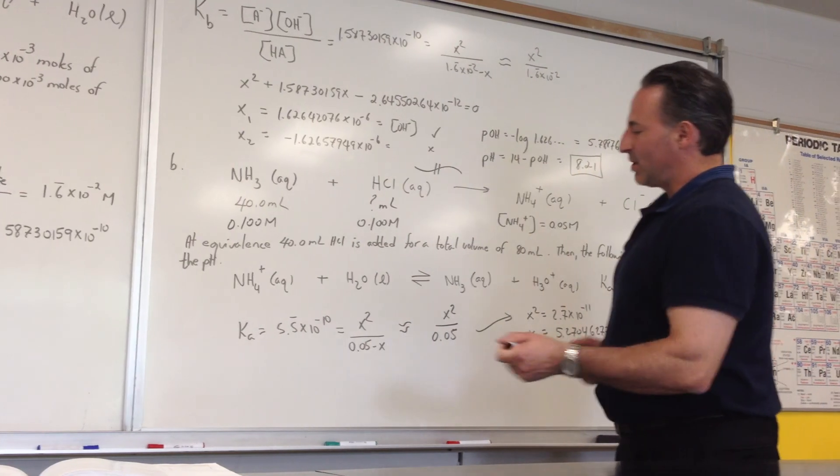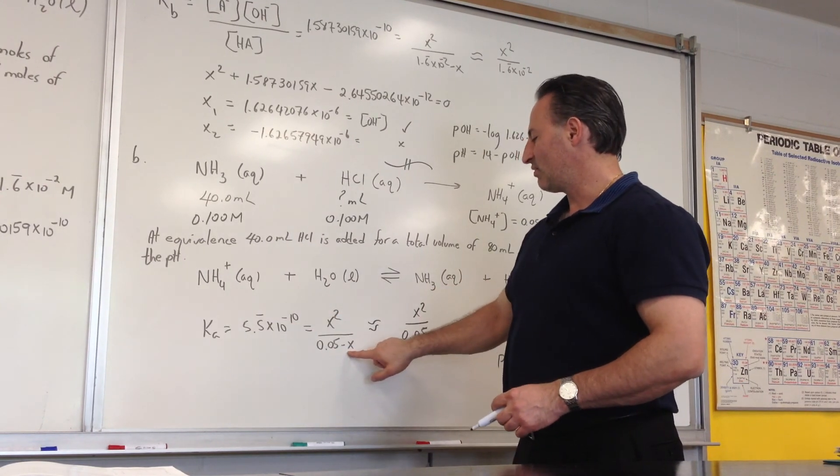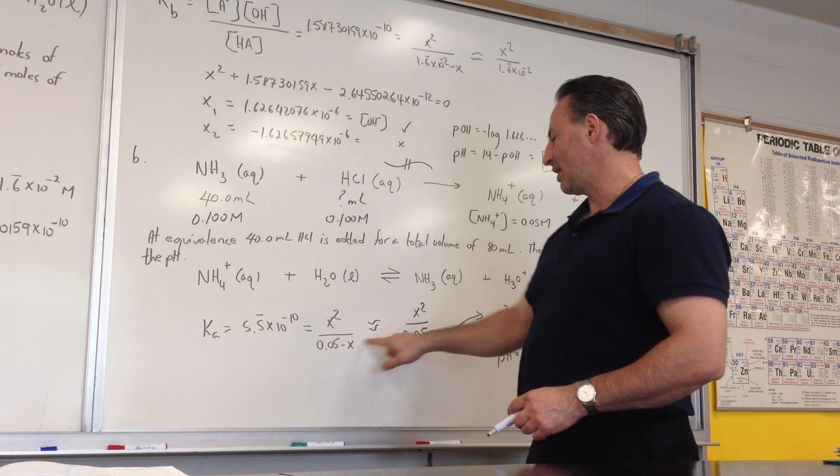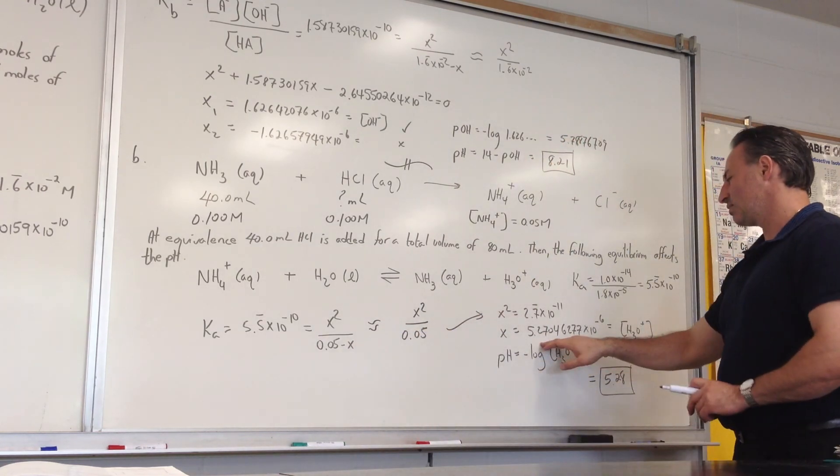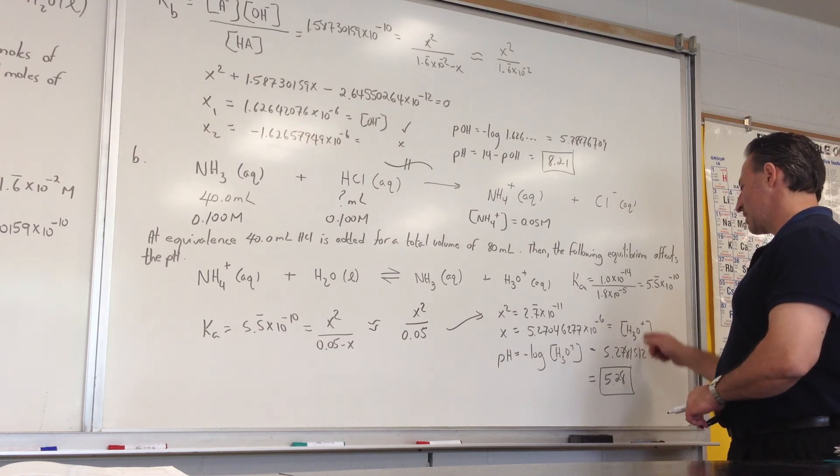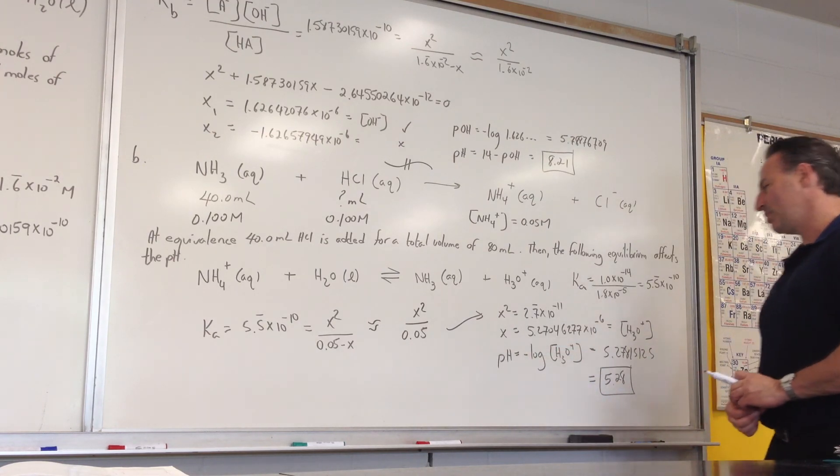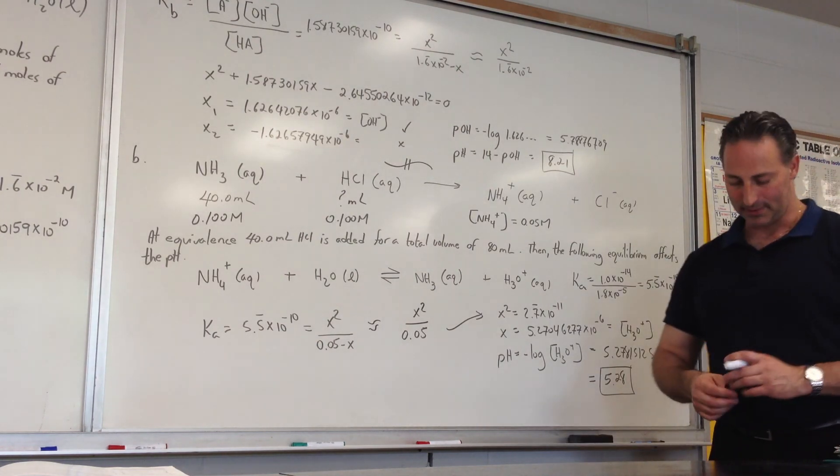We do an approximation again because 10 to the minus 10 is such a small number that the value of this number X is going to be very tiny compared to the value of 0.05. So this is a valid approximation. We find out that X is equal to 5.2 times 10 to the minus 6. That is equal to the hydronium concentration, and we plug it into the pH equation, and we get that the pH turns out to be 5.28. Thank you.